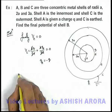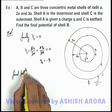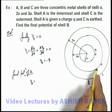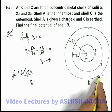Now if we wish to find the final potential, potential of B, obviously this will be the potential due to the charge on A as well as that of charge on C.